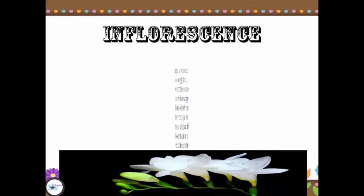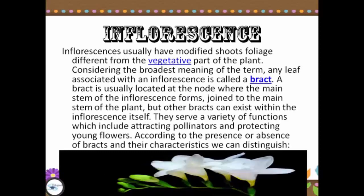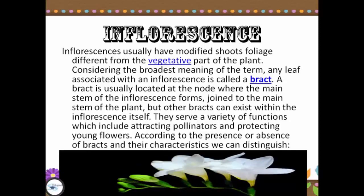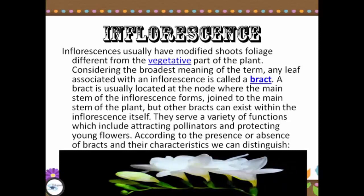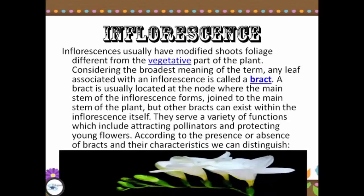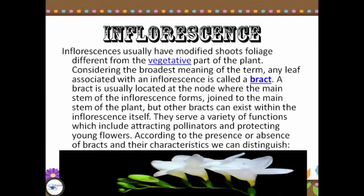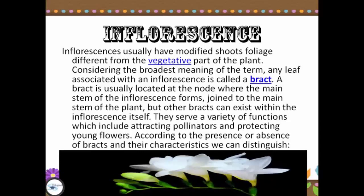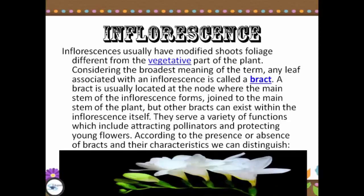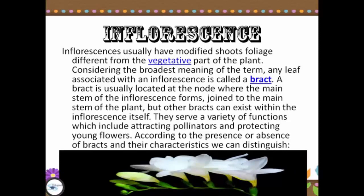Inflorescences also usually have modified shoots and foliage different from the vegetative part of the plant. Considering the broadest meaning of the term, any leaf associated with an inflorescence is called a bract. A bract is usually located at the node where the main stem of the inflorescence joins the main stem of the plant, but other bracts can exist within the inflorescence itself.